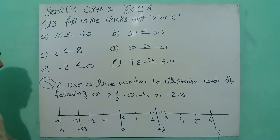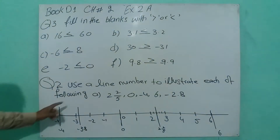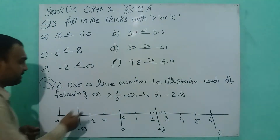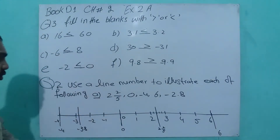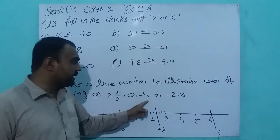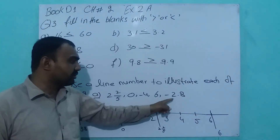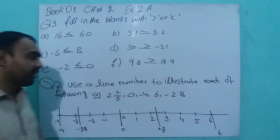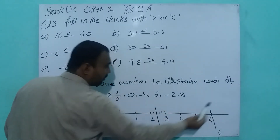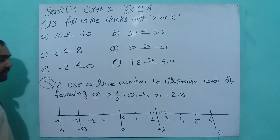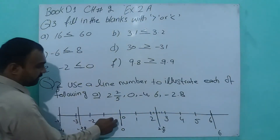Use a number line to illustrate each of the following. This is part A. The numbers are: 2 and 2 over 5, 0, minus 4, 6, and 2.8. First of all, draw a line, then take an interval.